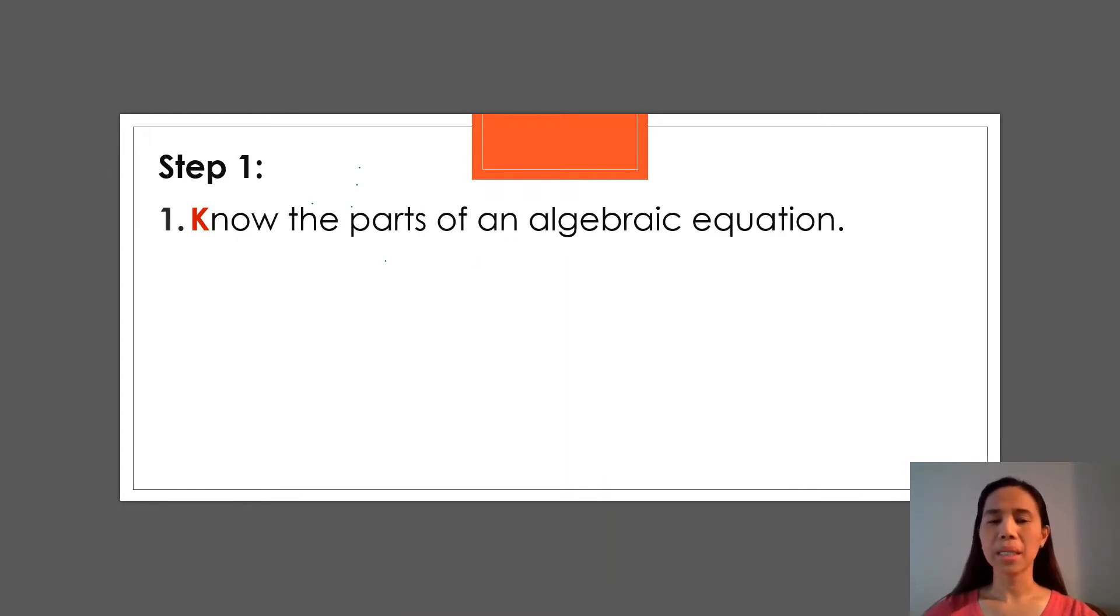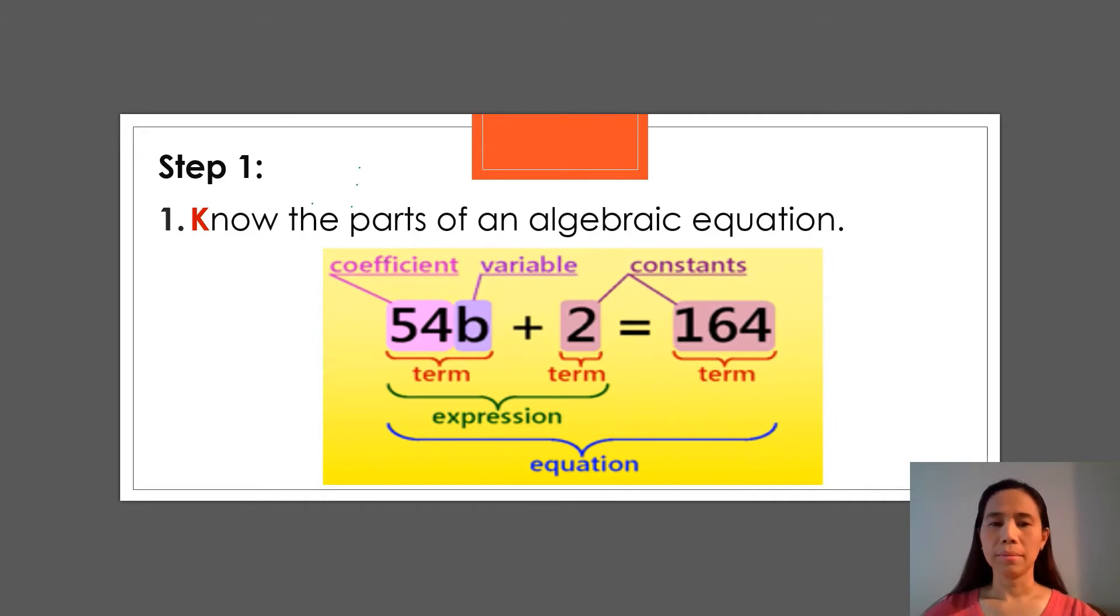Step 1: Know the parts of an algebraic equation. Coefficient is a number or constant that is used to multiply with a variable. Usually it is beside a letter. And this letter is called variable. It represents the unknown, and we can use any letter from the alphabet.